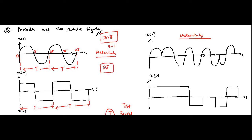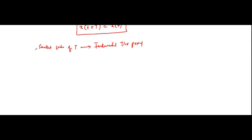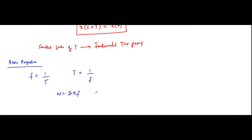This is the basic classification of periodic and non-periodic signals. Periodic signals repeat themselves after a fixed period of time; non-periodic signals have no such fixed repeating pattern. Some basic properties of periodic signals: first, frequency is the reciprocal of the time period — f = 1/T, and T = 1/f. For angular frequency, ω = 2πf, so f = ω/2π and T = 2π/ω.